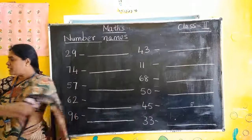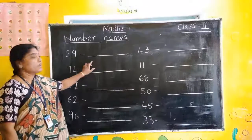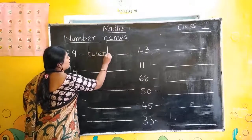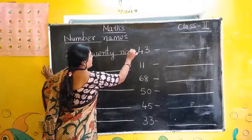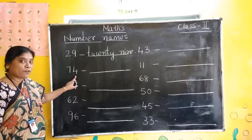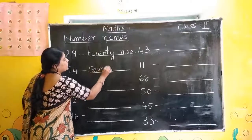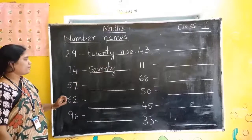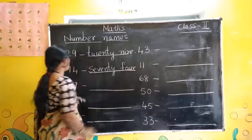Already you have learned spellings. We will write the spellings. 20 — twenty. What is this number? 9 — N-I-N-E, nine. So 29 — twenty-nine. Next: 7, 4 — 74. 70 and 4. 70 spelling: S-E-V-E-N-T-Y. 4: F-O-U-R.